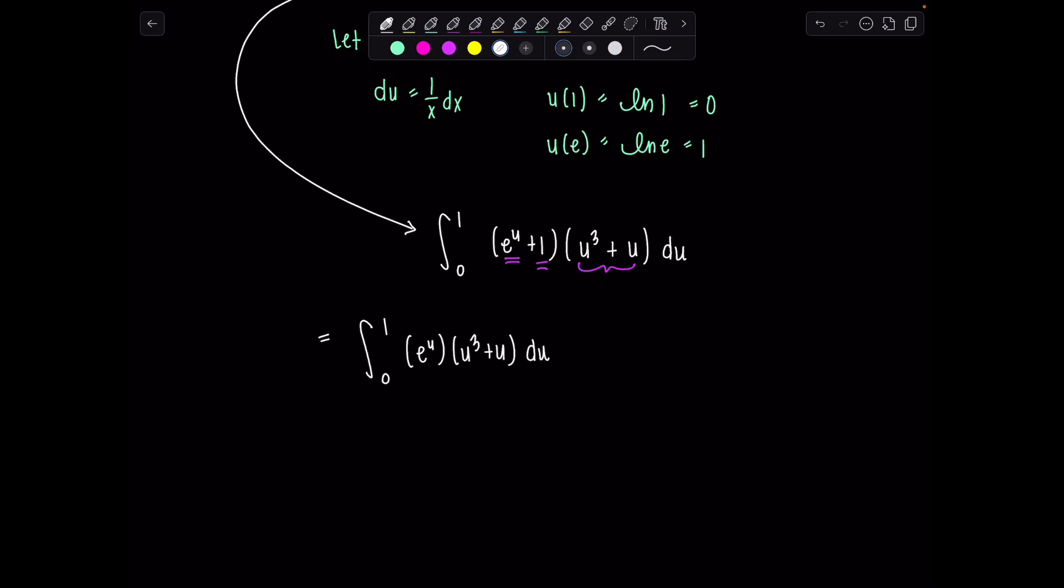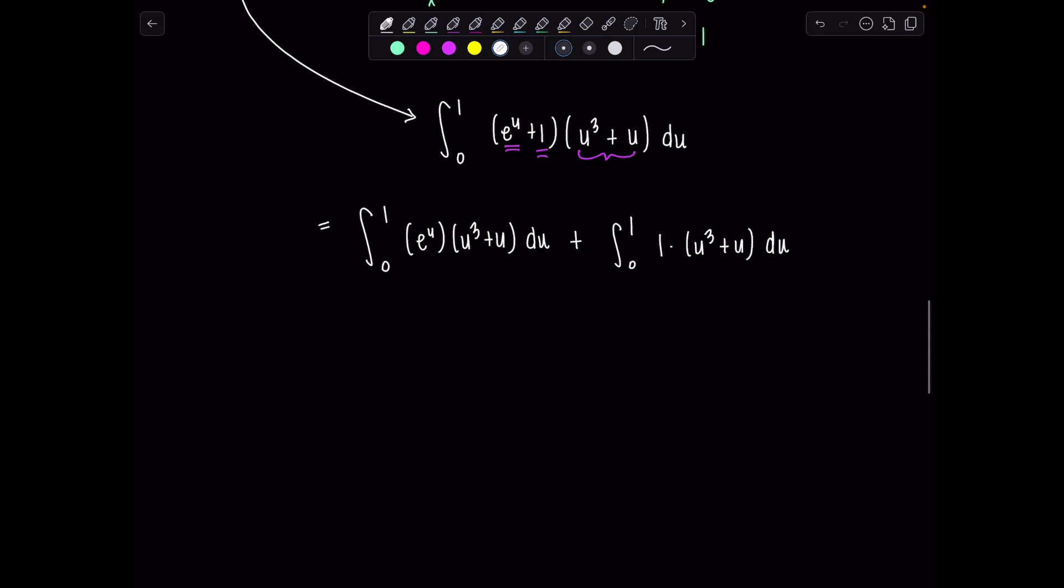So we've got e^u times (u³ + u) du plus the other one is just 1 times (u³ + u) du. You don't need so much parentheses, I just want you to see exactly what I'm doing with distributing. This one here, no problem. We learned how to integrate a polynomial way back when.